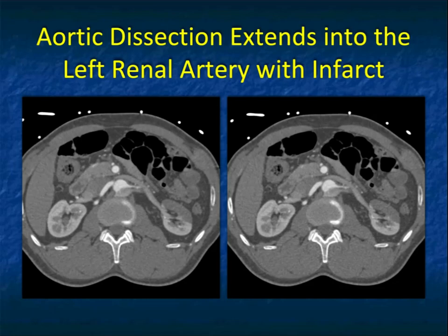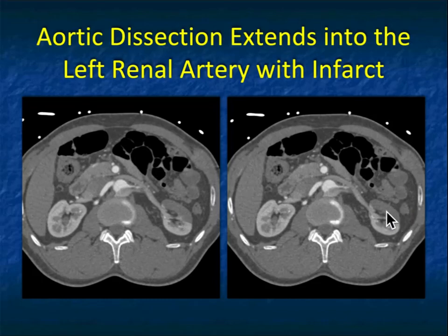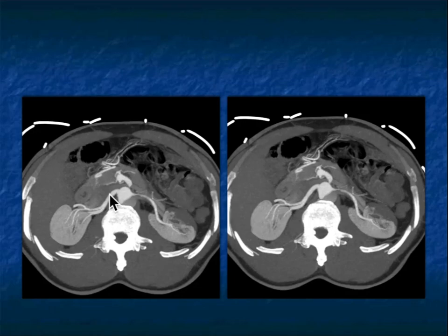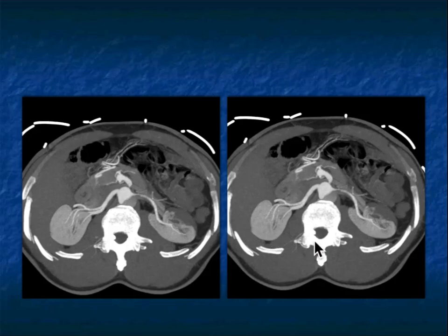Look at this case. The patient has a dissection of the abdominal aorta, and you can see the flap of the dissection is extending into the left renal artery. You can see the lack of perfusion — a developing infarct in the patient's left kidney. You can see it particularly nicely on the MIP imaging, where you really appreciate how narrow the vessel is and that some of the branches are cut off, which explains the developing infarct.